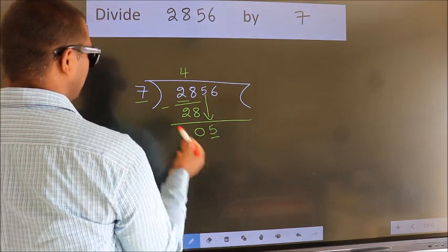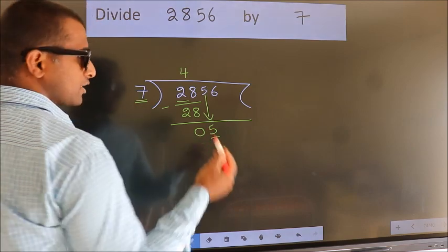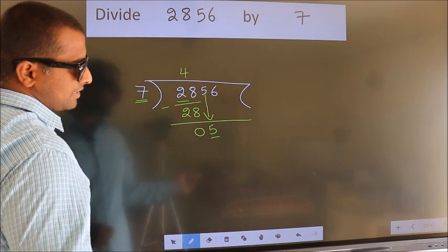Here we have 5. Here 7. 5 is smaller than 7. So we should bring down the second number.